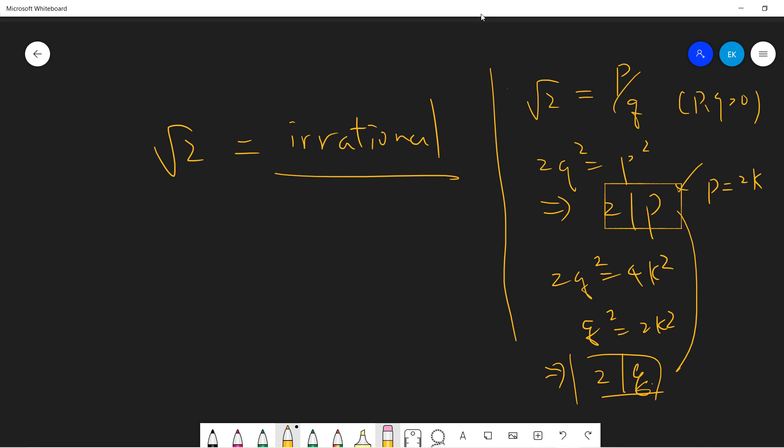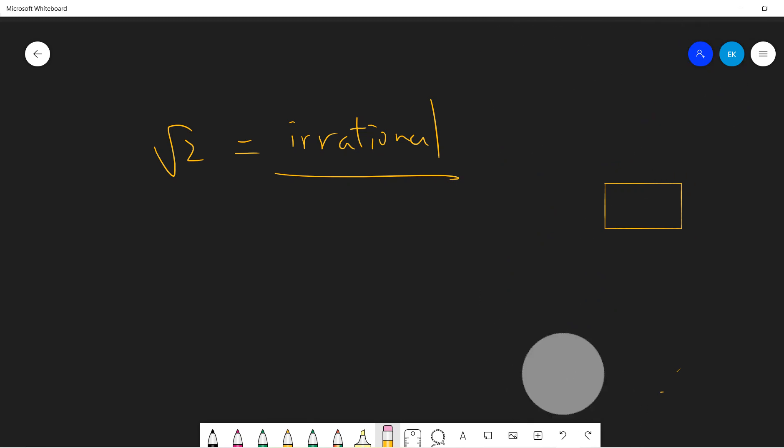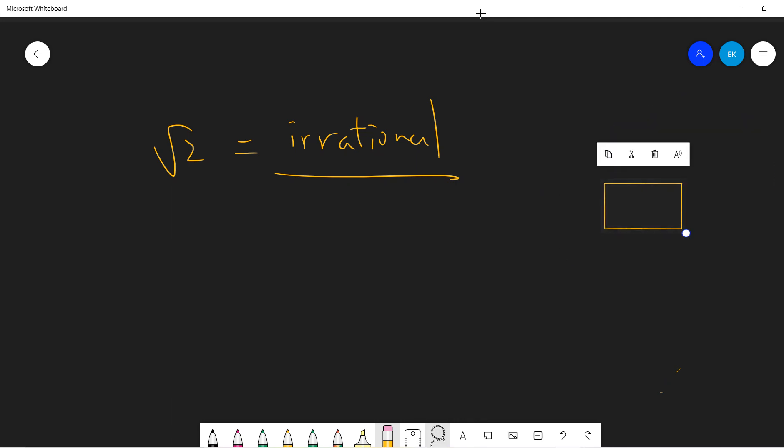But so they are not coprime. So if you assume that p and q must be coprime at the beginning, then you get a contradiction. Okay, so this is the junior high school proof.